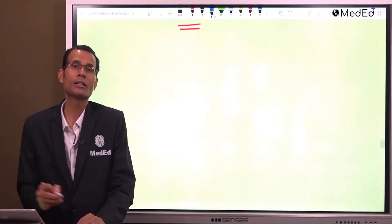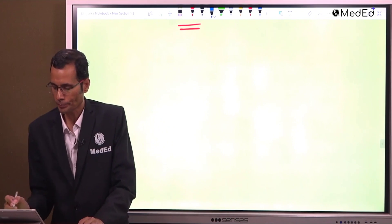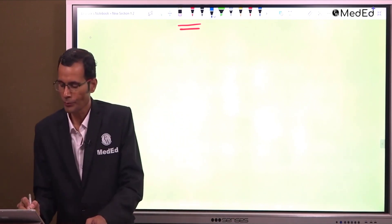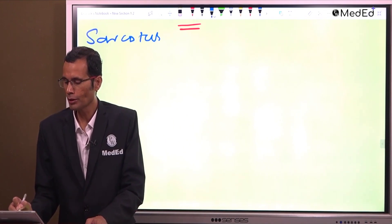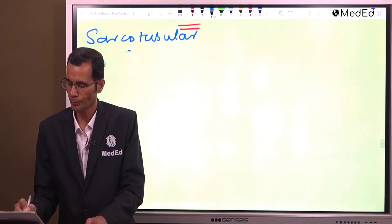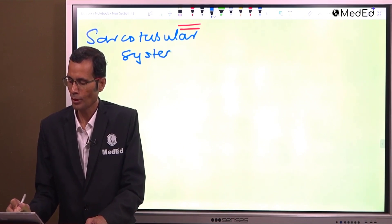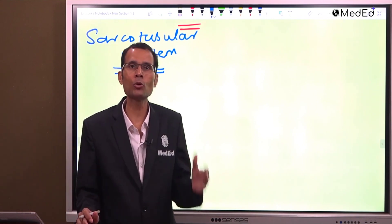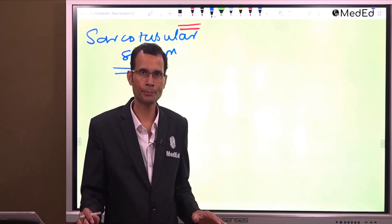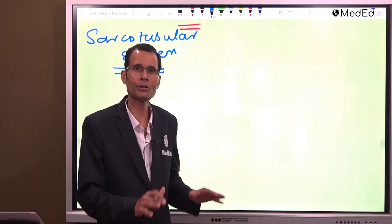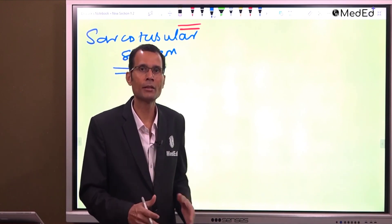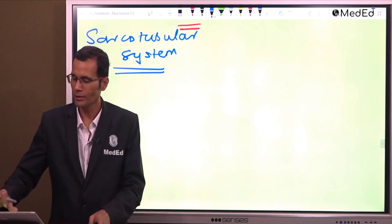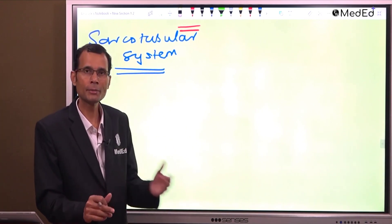Let us understand this coupling phenomenon. This coupling occurs in the sarco-tubular system. Now, whenever we say 'sarco,' it will mean muscle. In this chapter, we will take it in the context of the muscle. So, sarco-tubular system means system of tubules in the muscle.